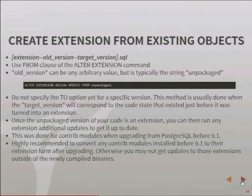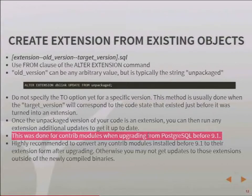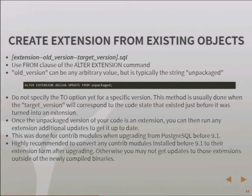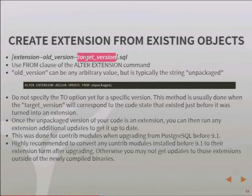You can also take code that's already in your database and turn it into an extension. Everything that was a contrib module before 9.1 is now an extension. If you have dblink installed already, there's a way to package it. The versions in extension update files are kind of arbitrary — you can make them whatever you want, and you use that arbitrary nature to do things like packaging existing code.